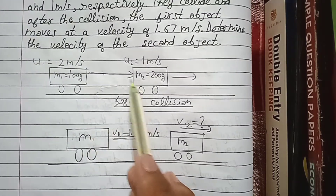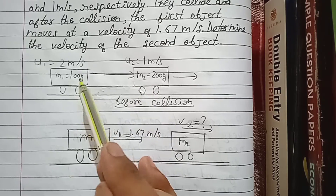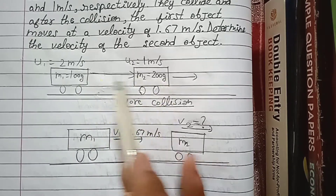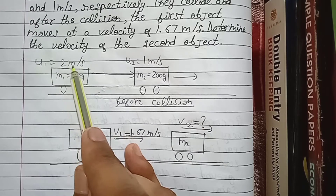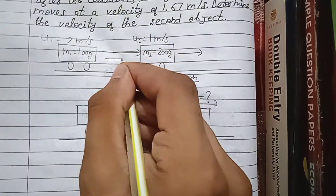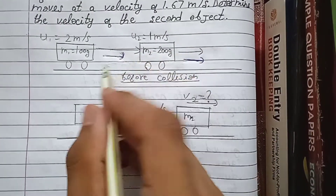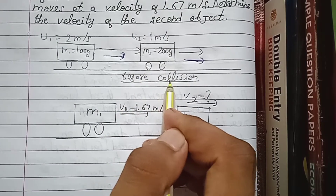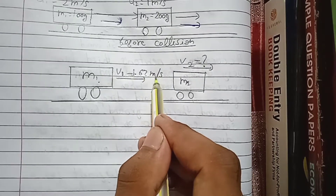There are two objects — a cart or cycle or bike or something. One object has mass m1 equal to 100 gram, and m2 is equal to 200 gram. The initial velocity of m1 is 2 meter per second and m2 is 1 meter per second, before collision. Both are moving in the same direction. After the collision, m1 has a final velocity v1 equal to 1.67 meter per second.